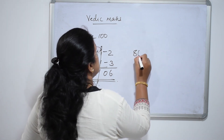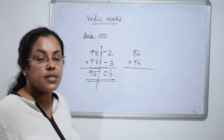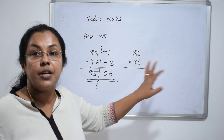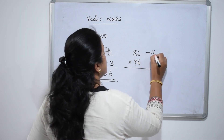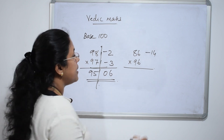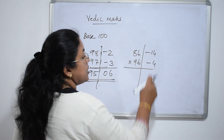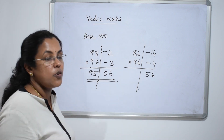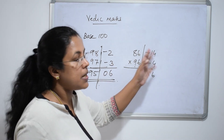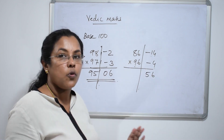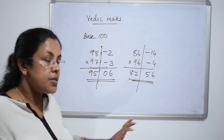Suppose we want to multiply 86 and 96. Write the deviations from 100: 86 is 14 less than 100, so write minus 14; and 96 is 4 less than 100, so write minus 4. Divide into 2 parts. What is 14 into 4? 14 fours are 56. For the left part: 86 minus 4 — both 96 minus 14 and 86 minus 4 equal 82. So the final answer is 8256.